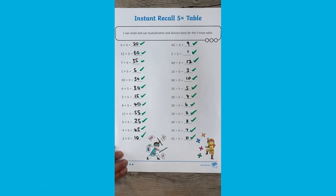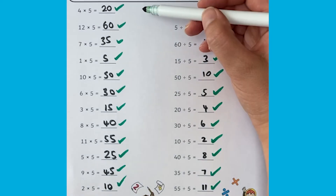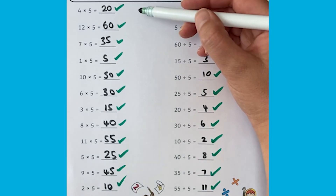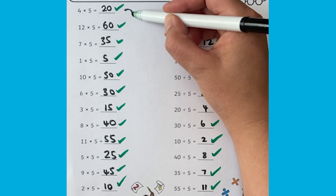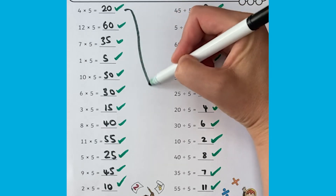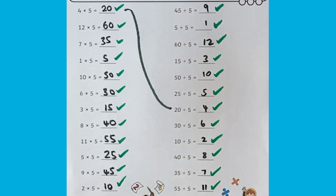You could also encourage children to match up the corresponding multiplication and division facts — so for example, 4 times 5 equals 20 would go to 20 divided by 5 equals 4.